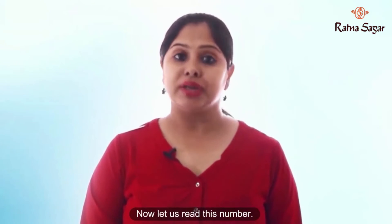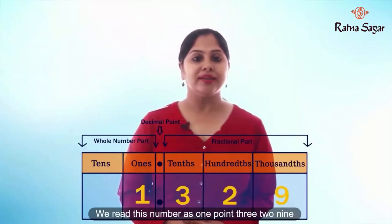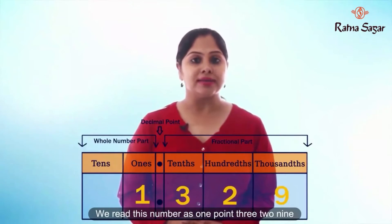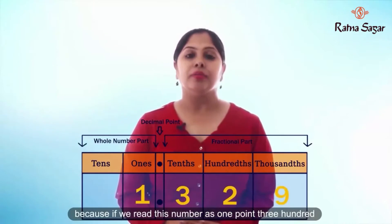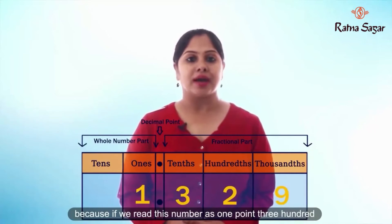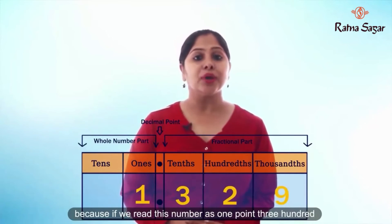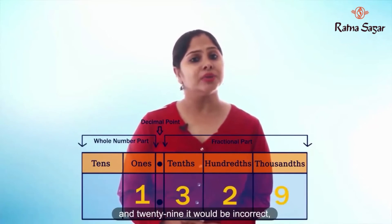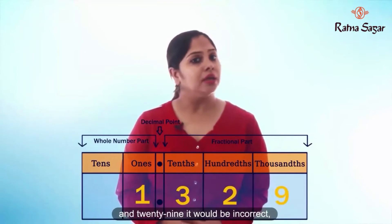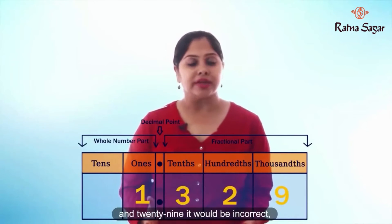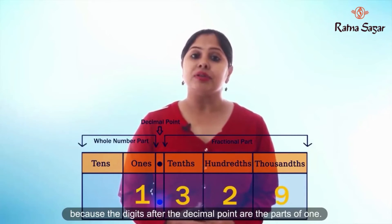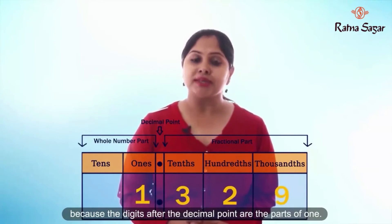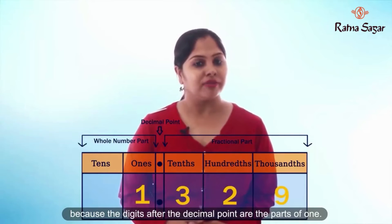Now let us read this number. We read this number as 1.329. Reading it any other way would be incorrect, because the digits after the decimal point are the parts of 1.